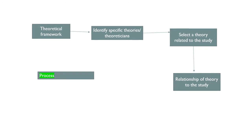In practice, the researcher must look at previous studies through literature review based on keywords. The researcher should look at major journal indexes like Web of Science and Scopus, and major publishers like Taylor and Francis, Springer, and Wiley. Based on the keywords, identify specific theories, then select a theory related to the study and clarify the relationship of that theory to the study. This is the overall process of developing the conceptual framework.